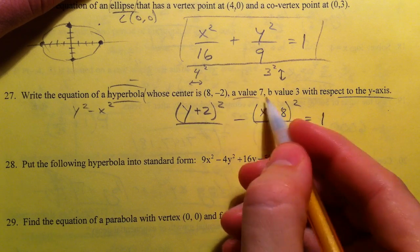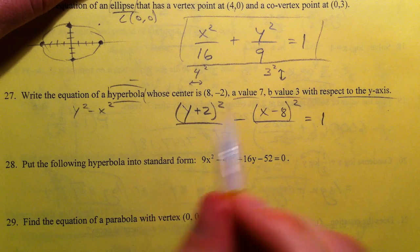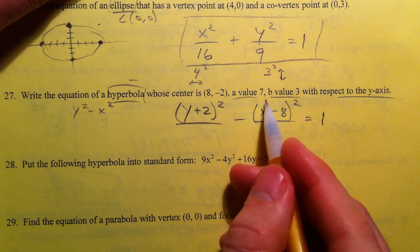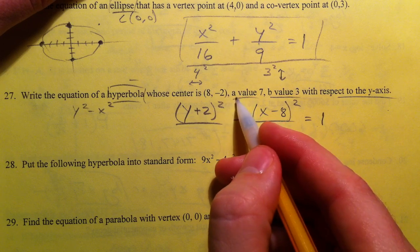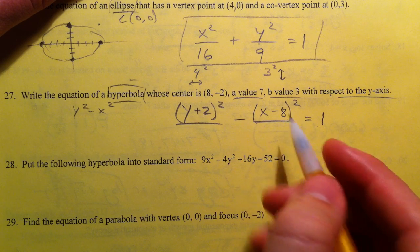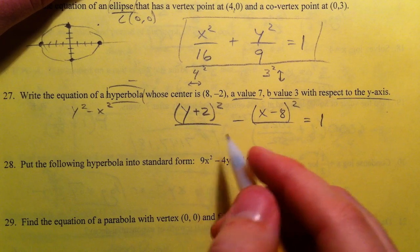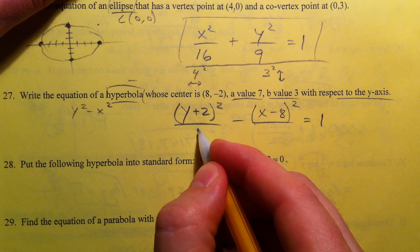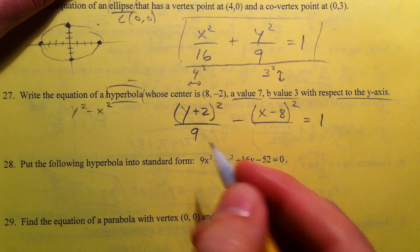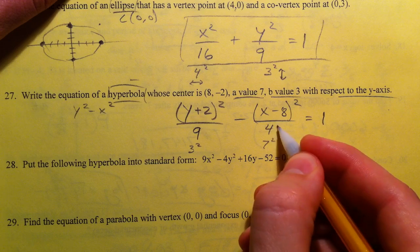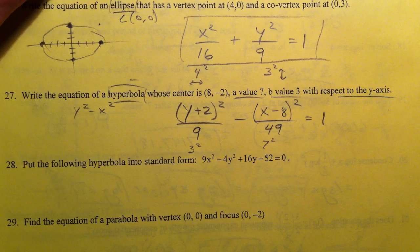Now we never made a big fuss over the a and the b and so whatever the equation comes out on your test this is what will help you out but let's assume that the a value always is underneath the x and the b value is always underneath the y in terms of hyperbolas and so we're going to put 9 for 3 squared and we're going to put 7 squared is 49 and we'll leave it as such.